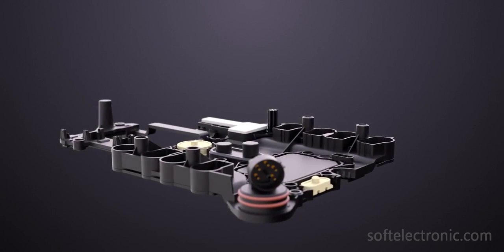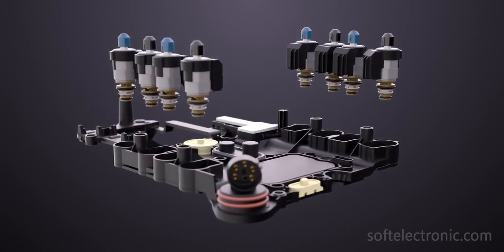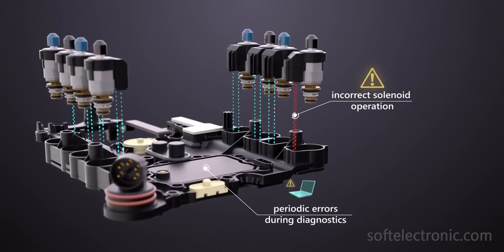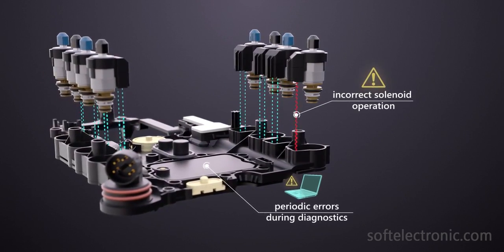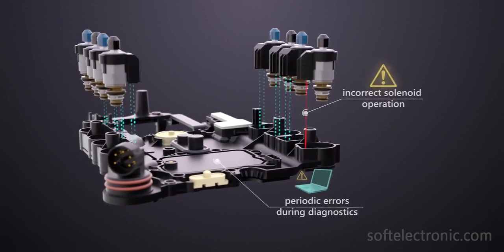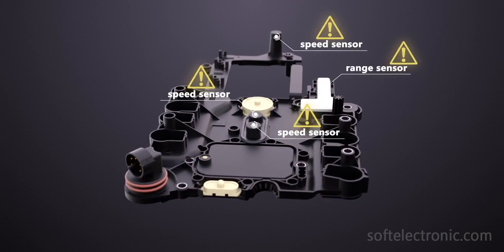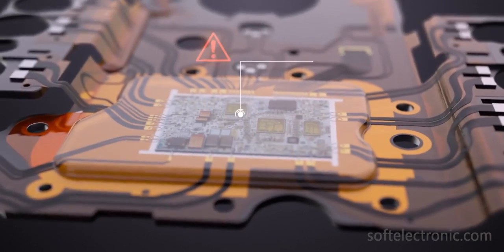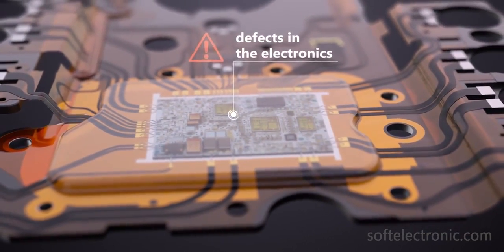The most common defects occurring in the control unit are: the computer control of the solenoids may be incorrect and during diagnostics, various error codes may periodically be stored as regards their work. One or more sensors can get faulty or the data from them may be implausible. Electronic components on the main board may be damaged.